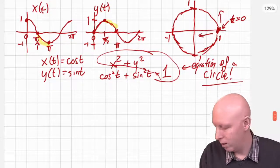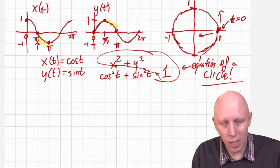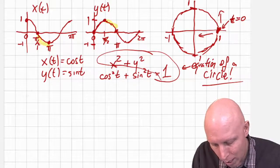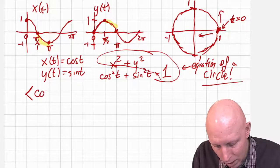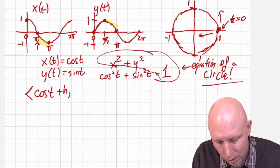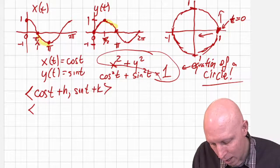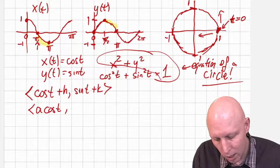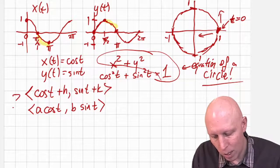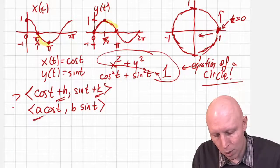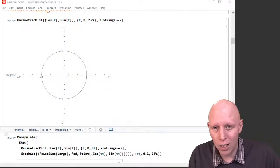Circle gets the square! Now let's take this equation and play with it. What happens if we take cosine of t plus h, sine of t plus k? What happens if we take a times cosine of t, b times sine of t? What happens if we add things to the components? What happens if we multiply the components by values? Let's go to the screen and see.